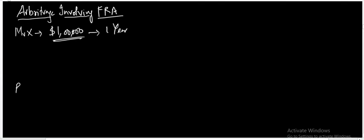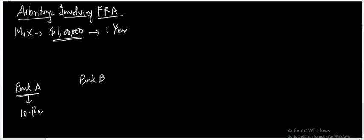He goes to 2 banks. He goes to Bank A, which says the interest rate is 10% per annum. There is another bank, Bank B, which says the interest rate is 12% per annum, but you can deposit only for 6 months.